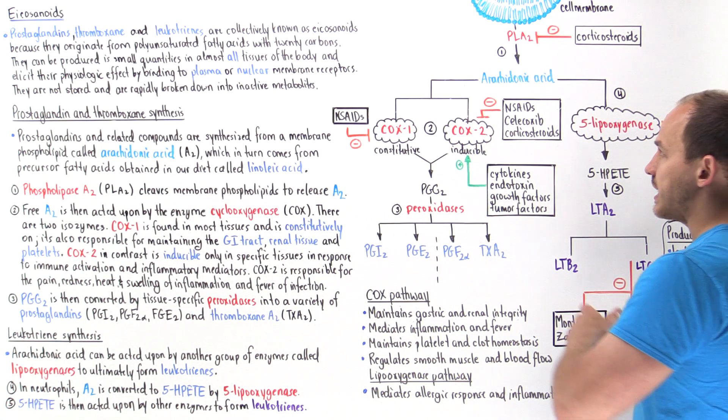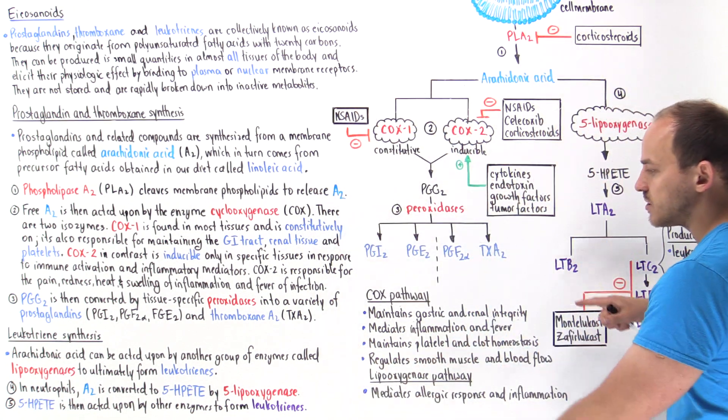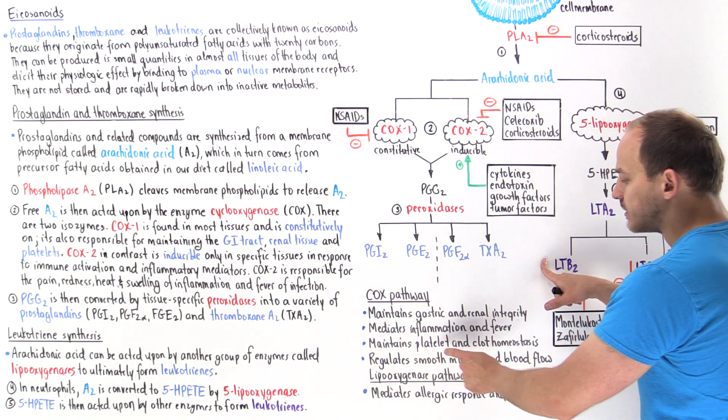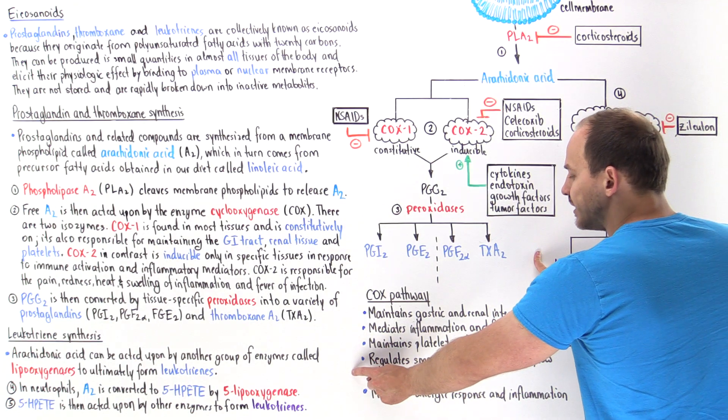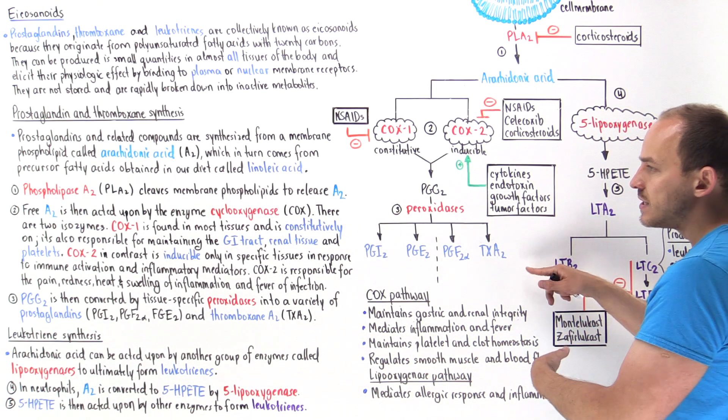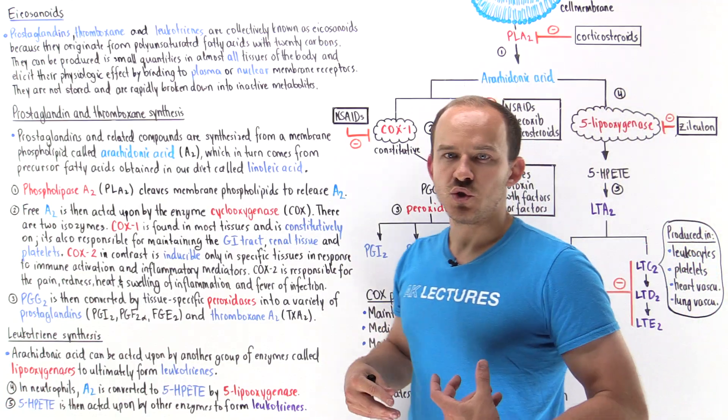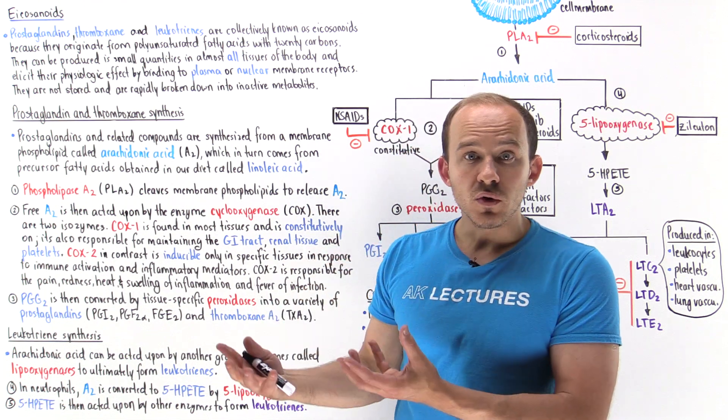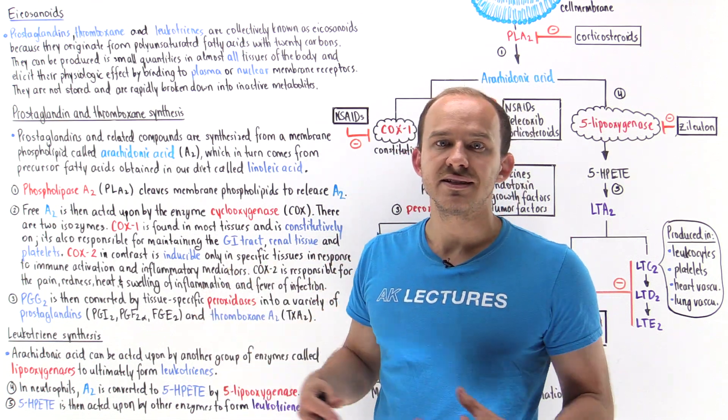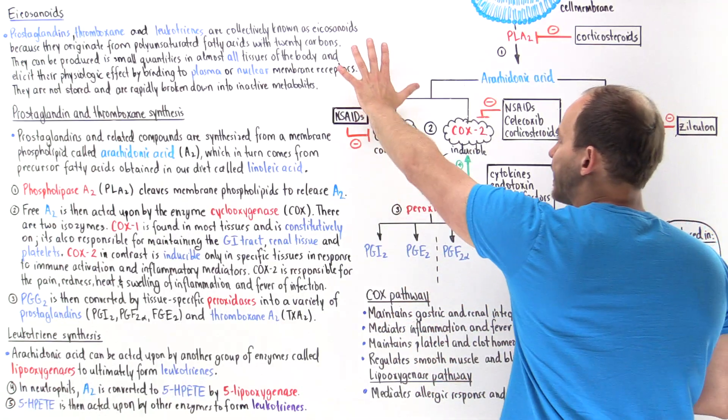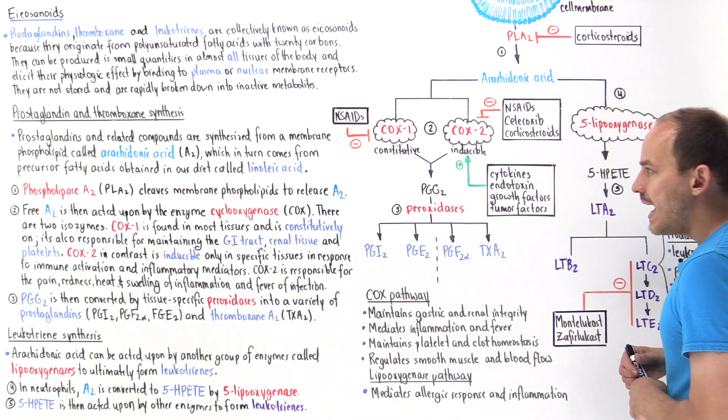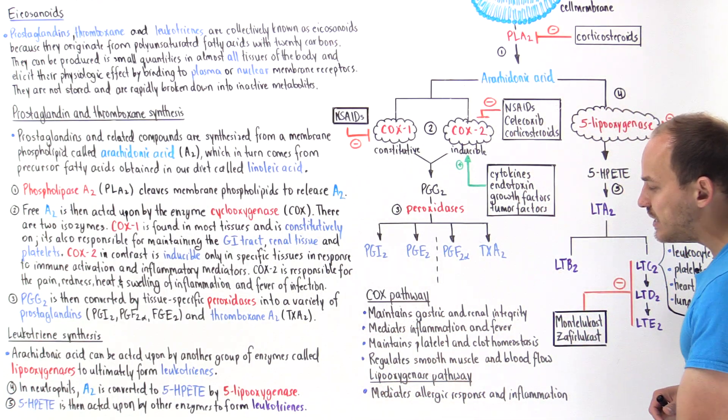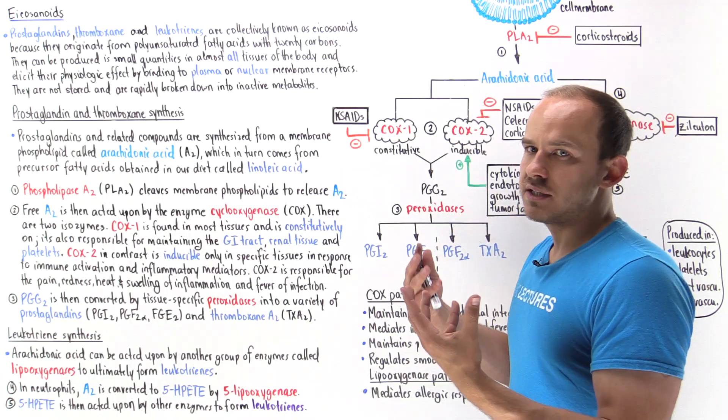Ultimately, this pathway is responsible for maintaining gastric and renal integrity, maintaining platelet and clot homeostasis, and regulating smooth muscle tone and blood flow. This helps maintain blood flow to the brain, for example, maintaining brain function, and helps maintain blood flow to the bone, helping maintain bone homeostasis. This is mediated by COX1. When COX2 is induced under certain conditions, it can mediate inflammation, fever, and blood clot formation.